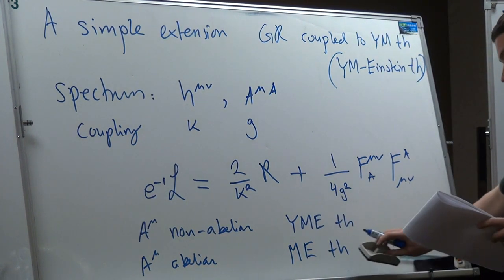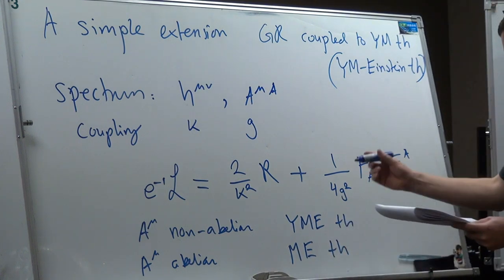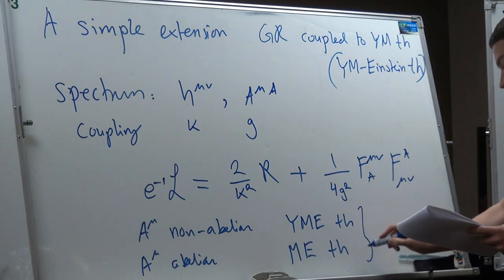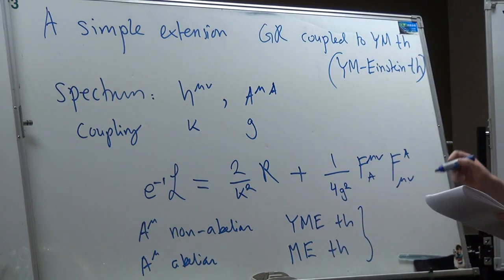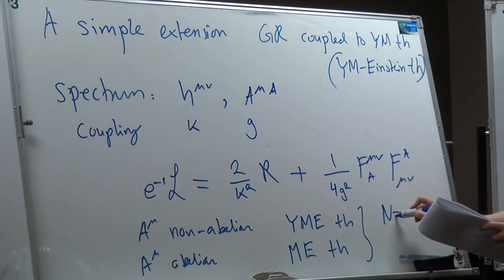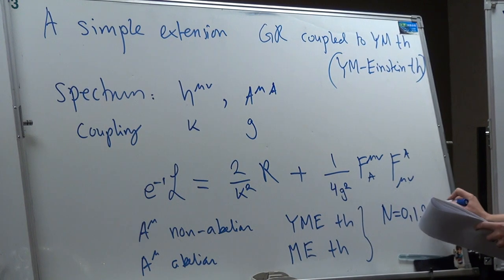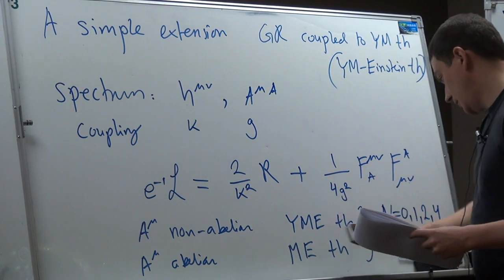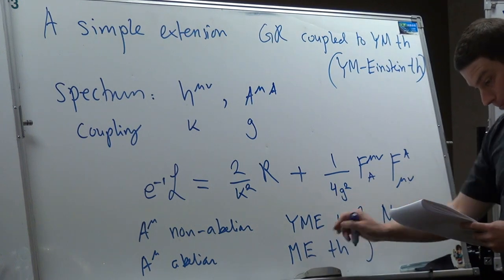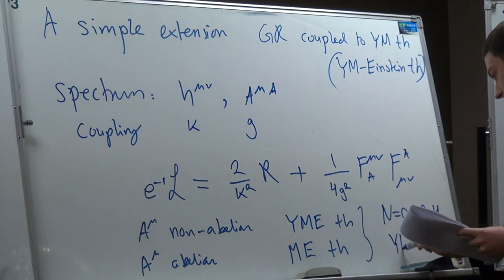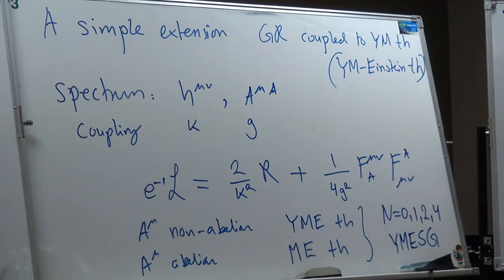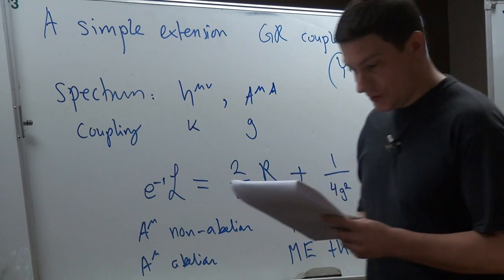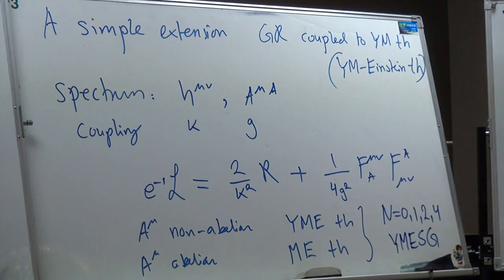If the vectors are truly non-abelian, then it's Yang-Mills-Einstein theory. If it's abelian, then we have Maxwell-Einstein theory. And of course there are supersymmetric extensions of these, which can extend to N=0, 1, 2, and 4 — what I'll call Yang-Mills-Einstein supergravity.